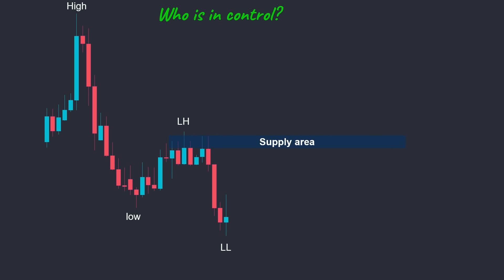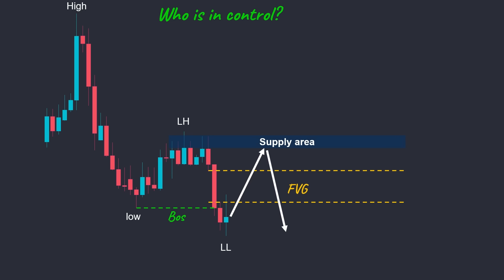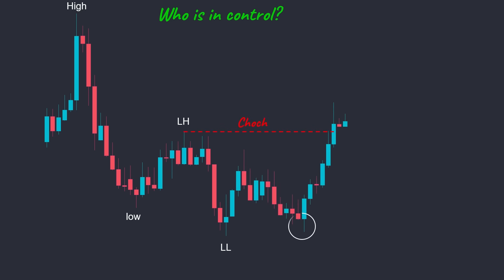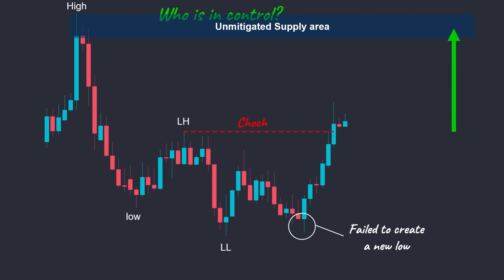Here we have a series of lower lows and lower highs and an extreme area of the supply zone. This supply area is so important because it created a bearish imbalance and a break of structure. So our bias is bearish, and if the price returns to this area, we can take short entries, and our first target would be this low. Here we can see that the price has failed to create a new low and has broken the supply zone to the upside, which shows that the demand has taken control. Now our bias is bullish, and we can take long entries at demand levels until we reach the unmitigated supply area in front of the price. After tapping into that zone, we have no clear bias and should wait to find out which side can take control again.